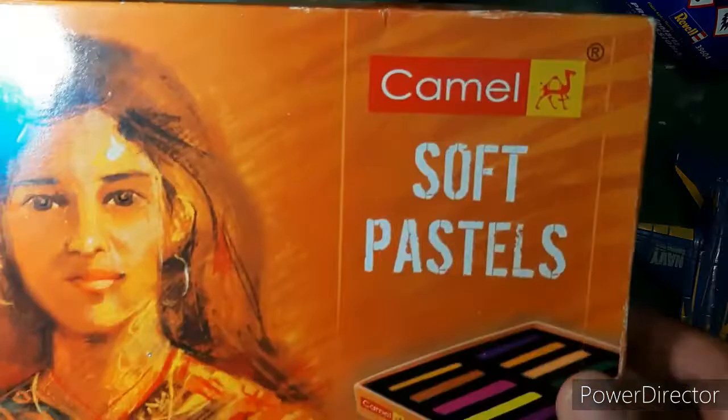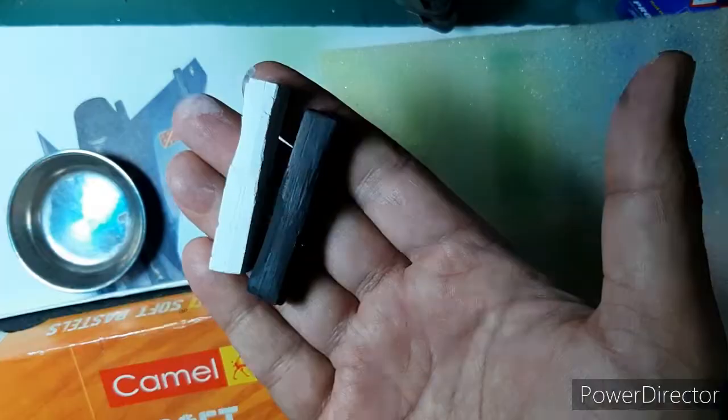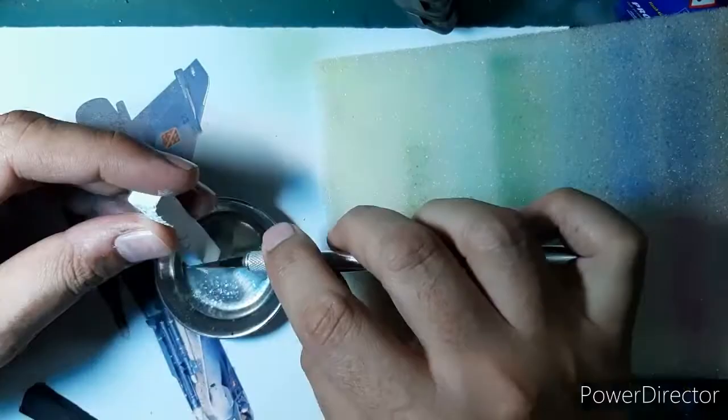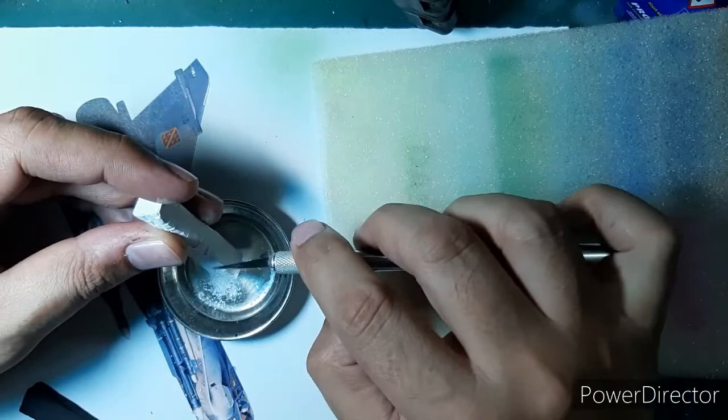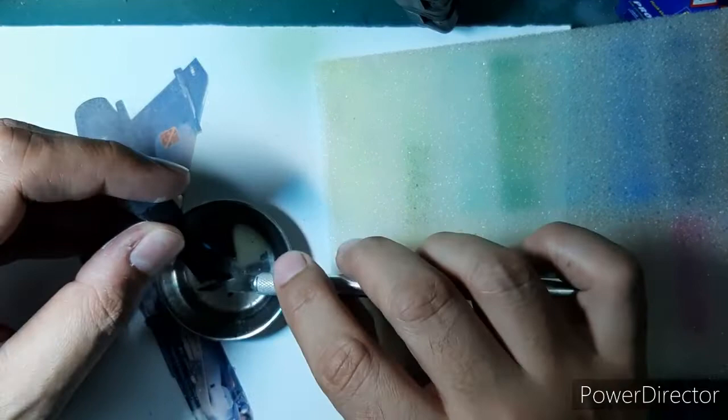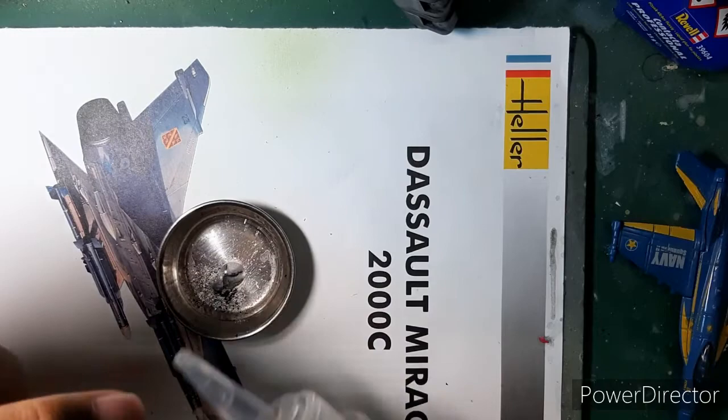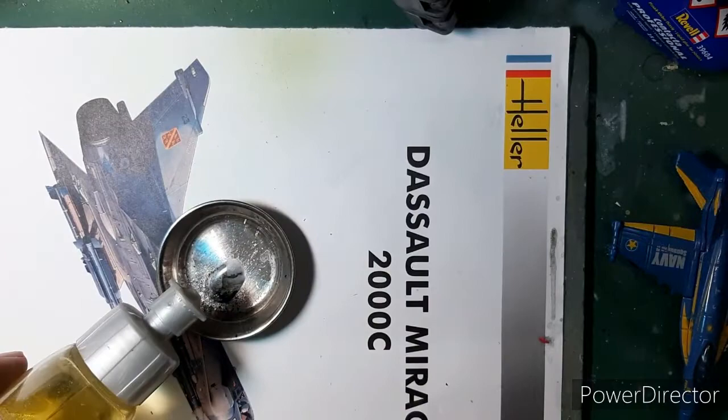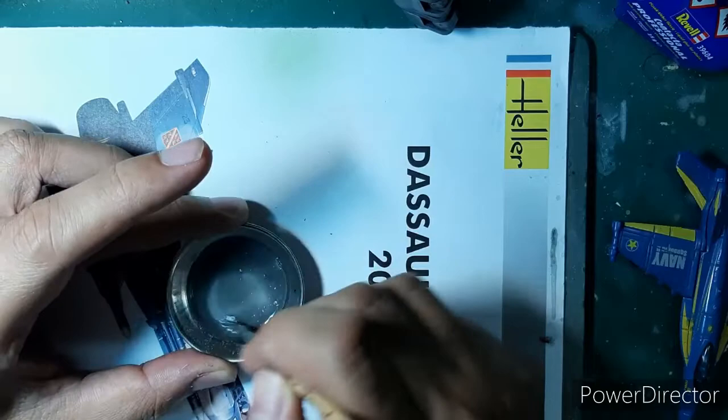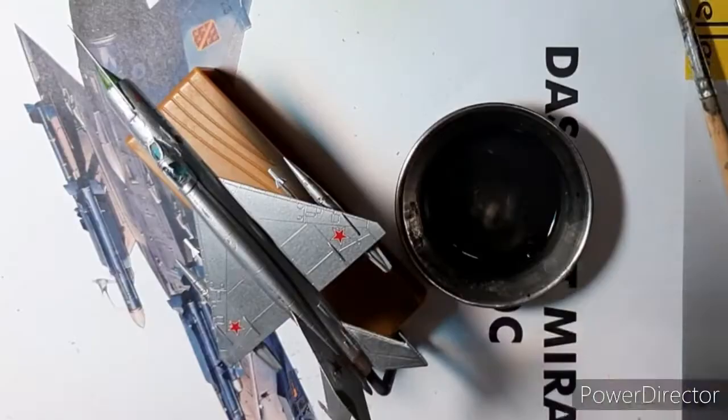I wanted to weather it a little more, and I took the help of my Camlin soft pastels. I created a dark gray wash by scraping in white and black into a container, adding just two drops of water and mixing it with a little dishwashing liquid and creating a wash. Once that was done, I went ahead for a pin wash.